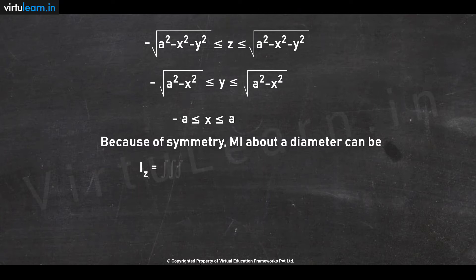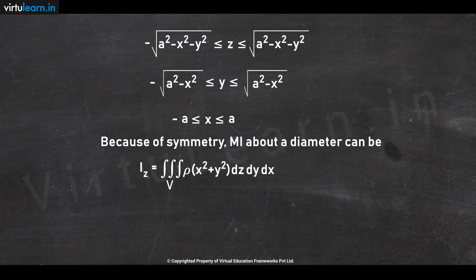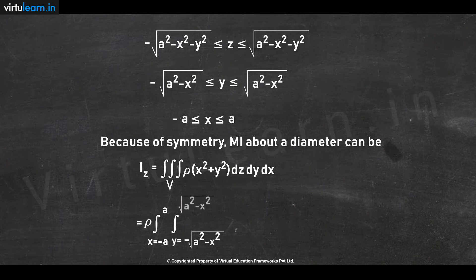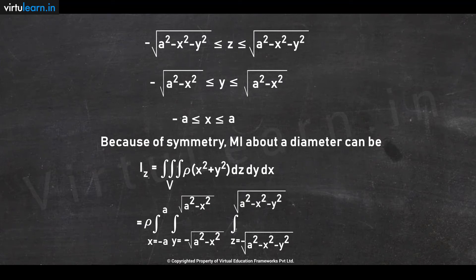I_z is equal to the triple integral over V of rho times (x² + y²) dz dy dx. Writing the limits: rho times the integral from x = −a to +a, integral from y = −root(a² − x²) to +root(a² − x²), integral from z = −root(a² − x² − y²) to +root(a² − x² − y²), of (x² + y²) dz dy dx.